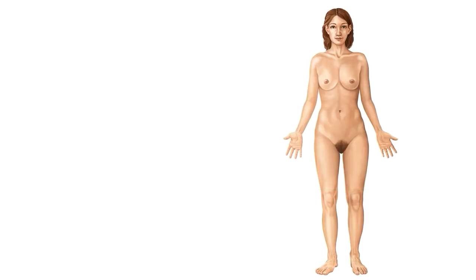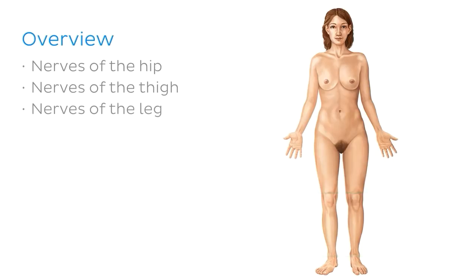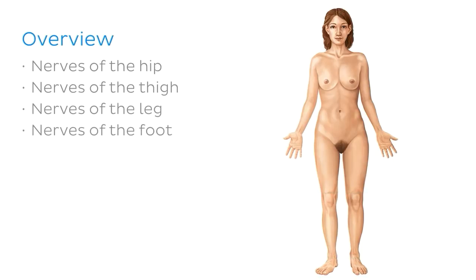In this tutorial, we'll be focusing on four main regions within the lower extremity: the nerves of the hip, the nerves of the thigh, the nerves of the leg, and the nerves of the foot. These are ordered from most proximal to distal, and you'll be able to follow this as we go through the nerves.